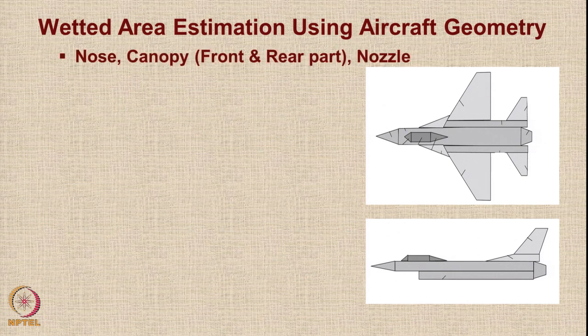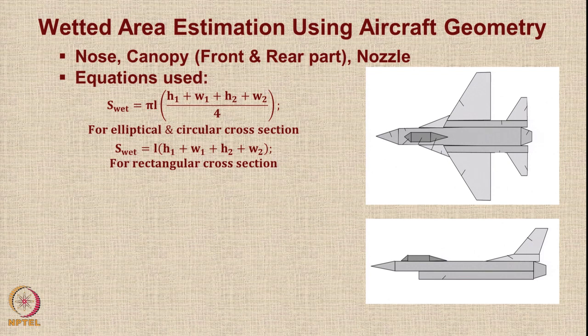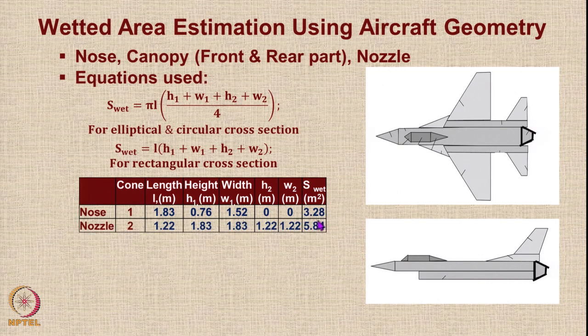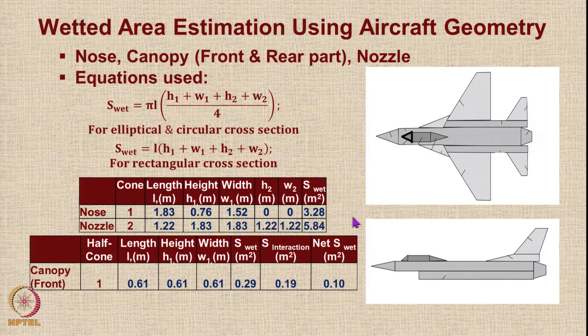Moving ahead, the nose, canopy front, canopy rear, and nozzle are treated as cones or frustums of cones using standard formulae. The nose is considered conical with nose cone length, height, and width. The rear portion is a frustum of a cone. There are two cones with dimensions L1, H1, W1 and L2, H2, W2. The canopy front is a half cone and the rear canopy is also conical.